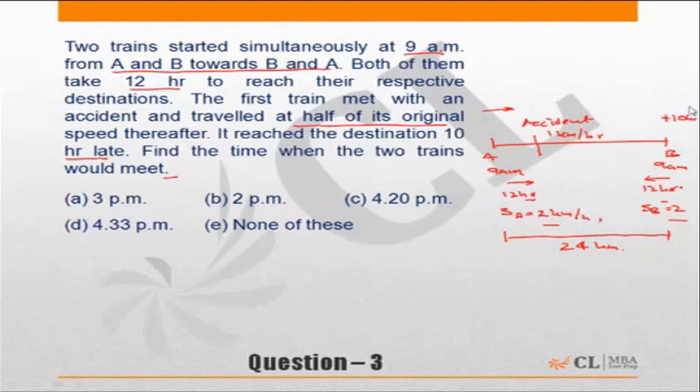Now let us go to this item that the first train gets delayed by 10 hours. If the first train is late by 10 hours, the entire delay would have happened after the accident. Now since the speed has become half, that implies time should become twice.